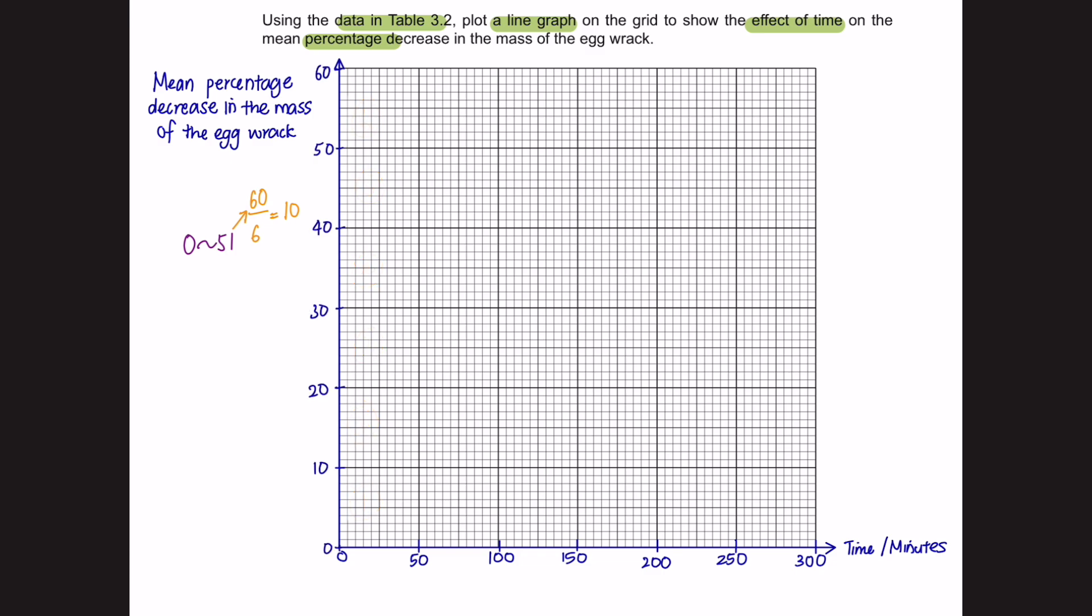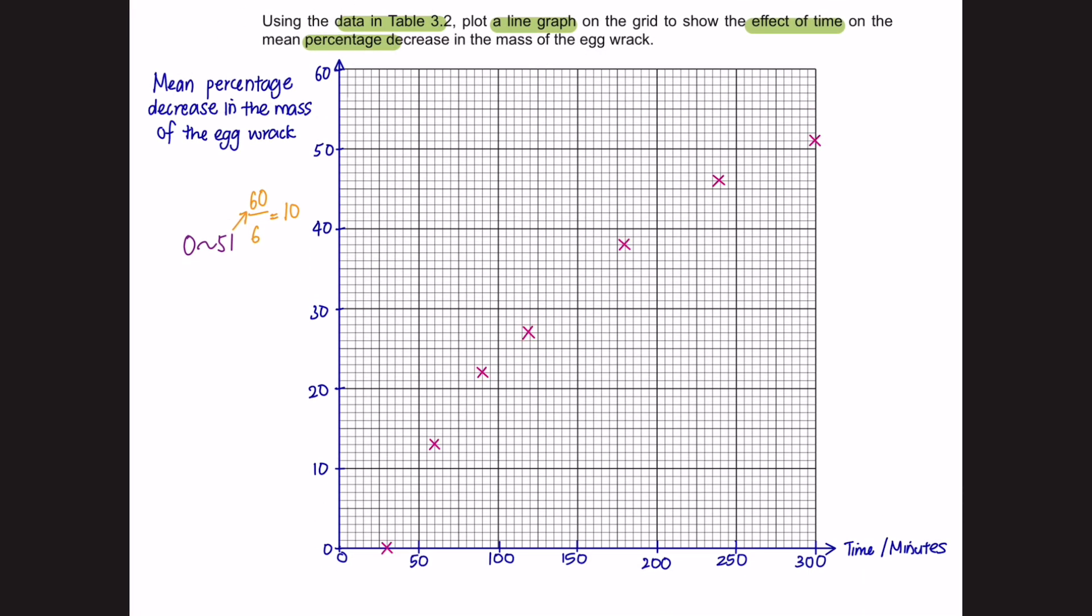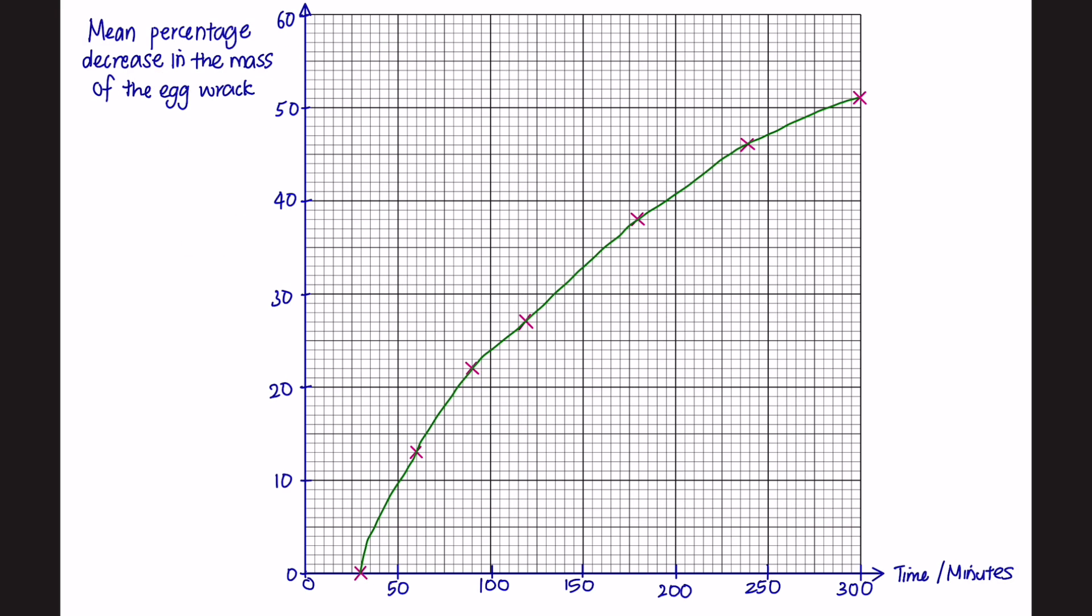Okay, once we have labeled the axis, we can plot the points from your table into the graph. Once you have plotted your points, you can draw a line that connects all the points in your graph. And this is what my graph looks like. Make sure that the axes of your graphs are properly labeled. Use a pencil to plot your points. Your points should be clearly marked with an X. And lastly, make sure you occupy more than half of the grid.